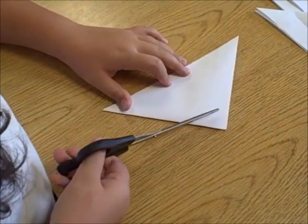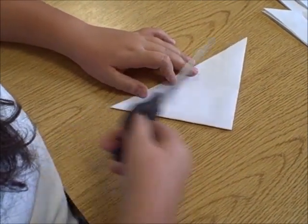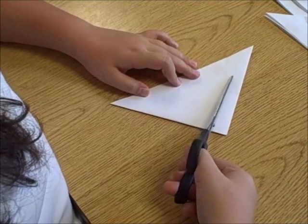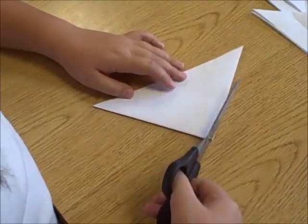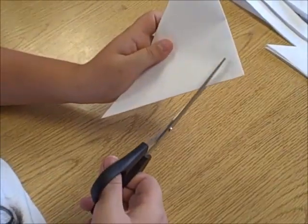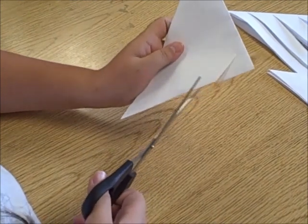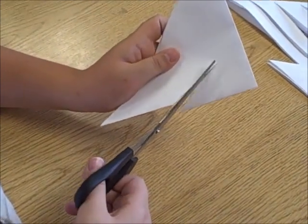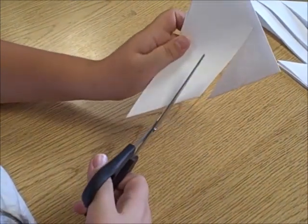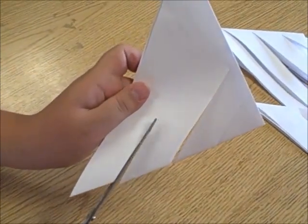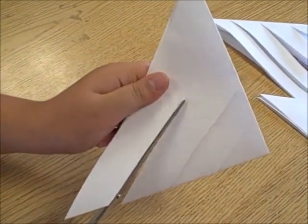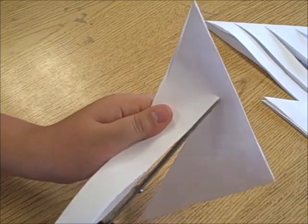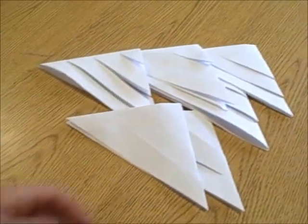So take your scissors and make three diagonal cuts, going to the edge but not on the edge. Do this with all six pieces of paper.